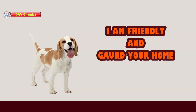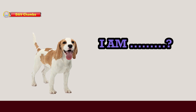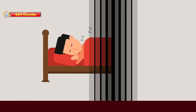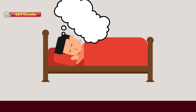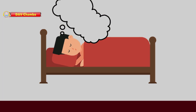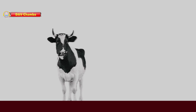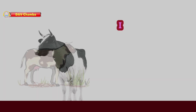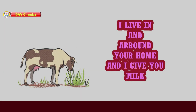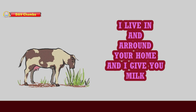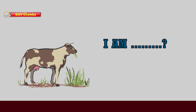The first animal said, 'I am friendly and guard your home. I am dog.' Then the next animal came and said, 'I live in and around your home. I give you milk. Who am I? I am cow.'